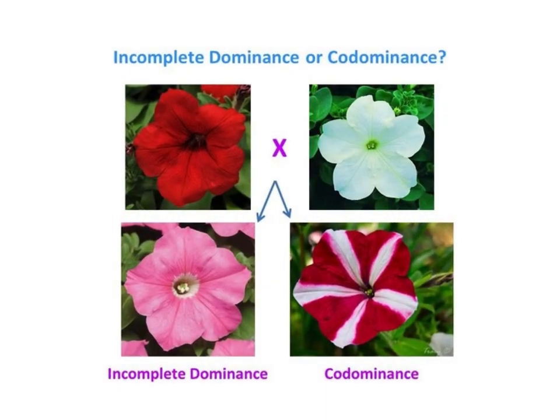Here's the difference: if you cross a red flower and a white flower and the offspring comes out pink, that's incomplete dominance. But if you cross a white and a red and end up with red-and-white splotches, that's co-dominance. It's really easy to see when you get the results, though sometimes you'll just have a Punnett square to sort it out.